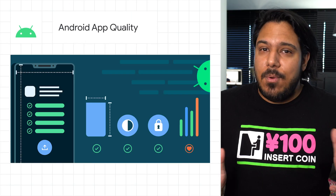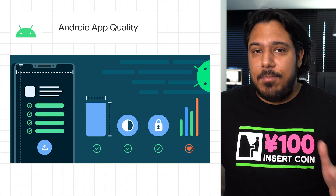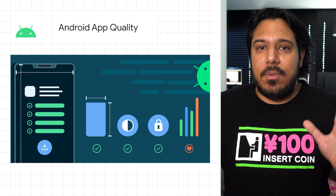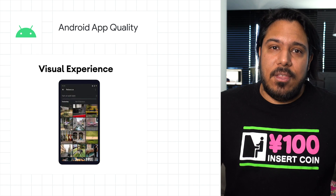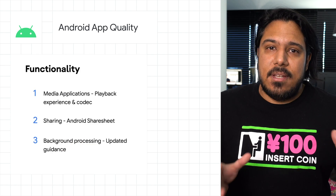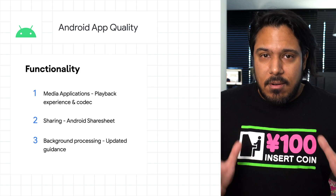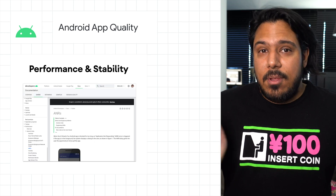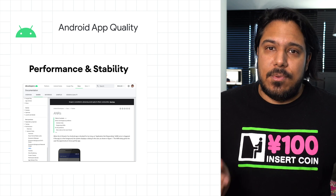We've launched a new app quality section in our Android developer site to keep you up to date with key aspects of app quality and provide related resources. In the first release, we've updated the core app quality checklist to take into account recent Android releases as well as the current trends of the app ecosystem. Click through to the post for an intro video and all the highlights from this release.